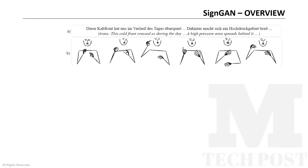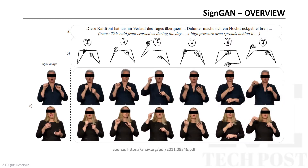At first, given a spoken language sentence, it is translated into a sequence of sign language skeleton poses as an intermediate representation. Such a sequence is then used to condition a video-to-video synthesis model that generates a photorealistic sign language video.